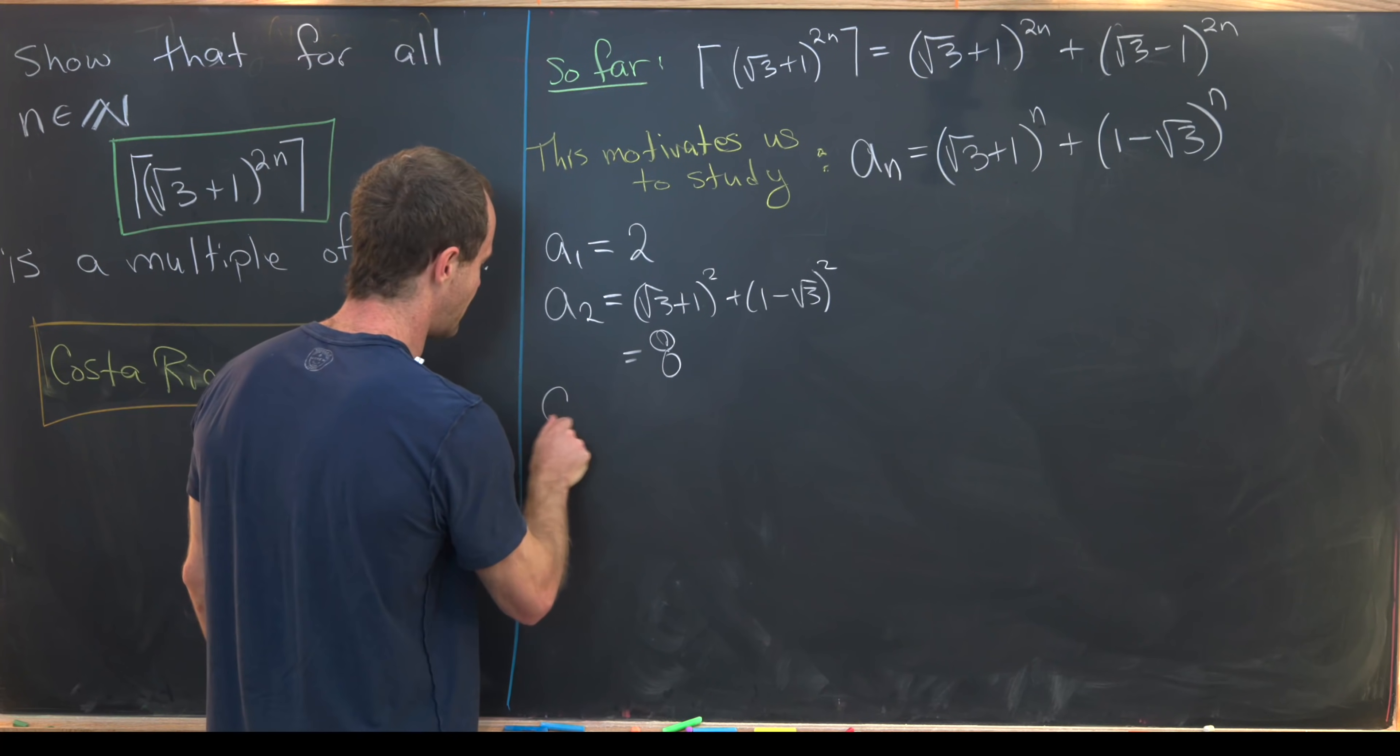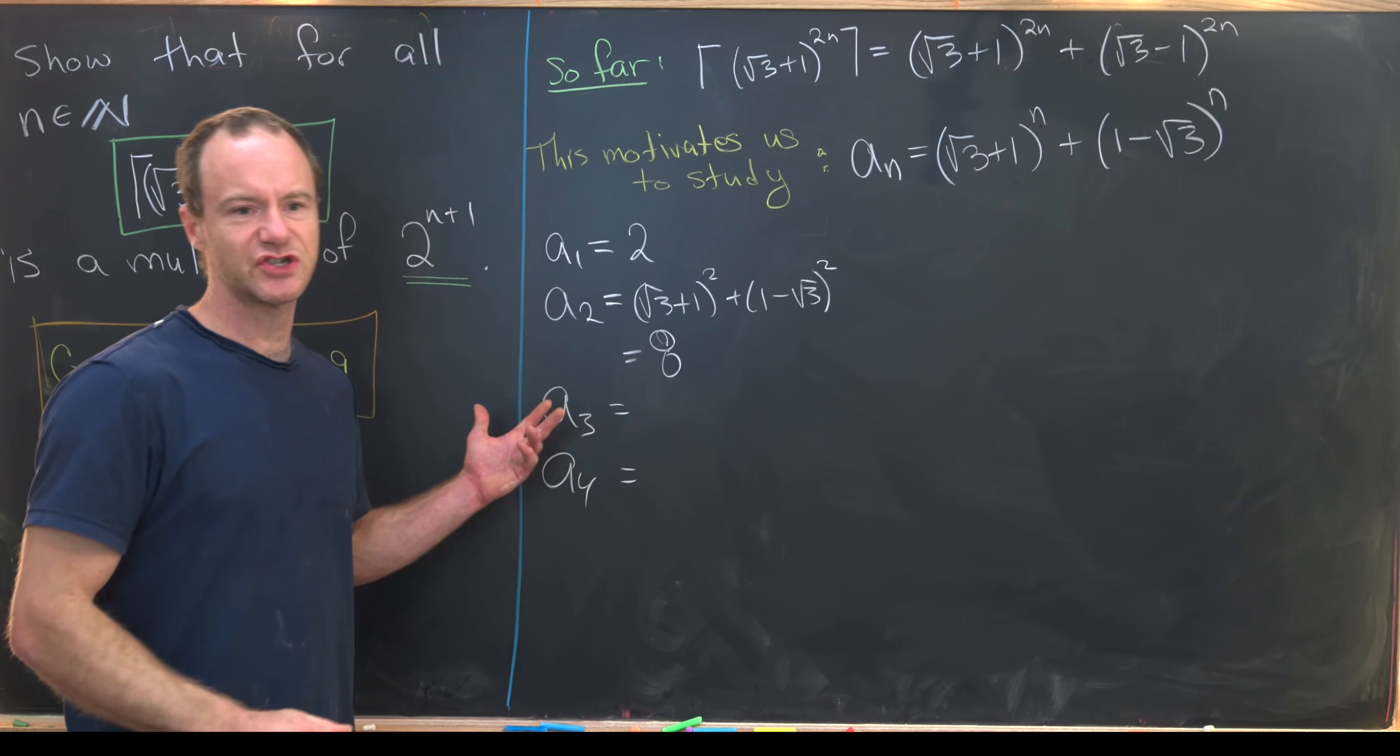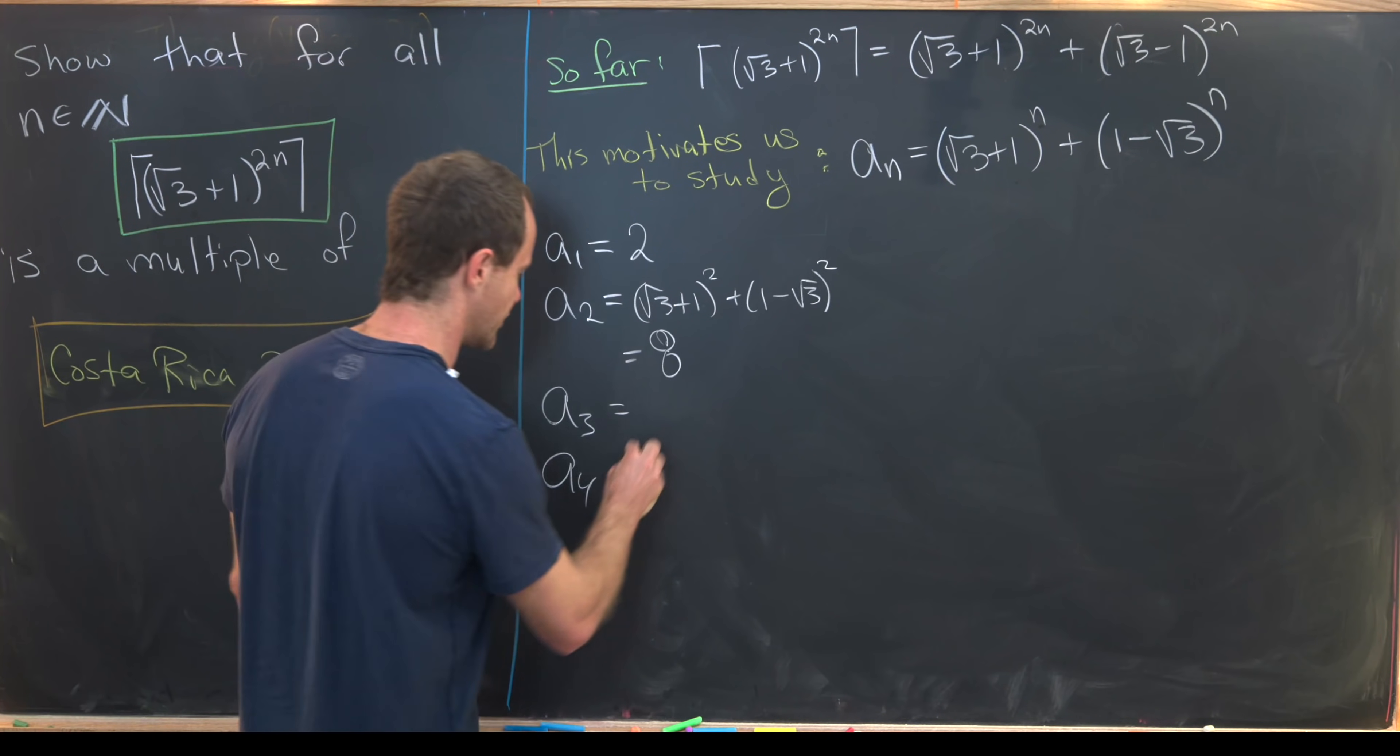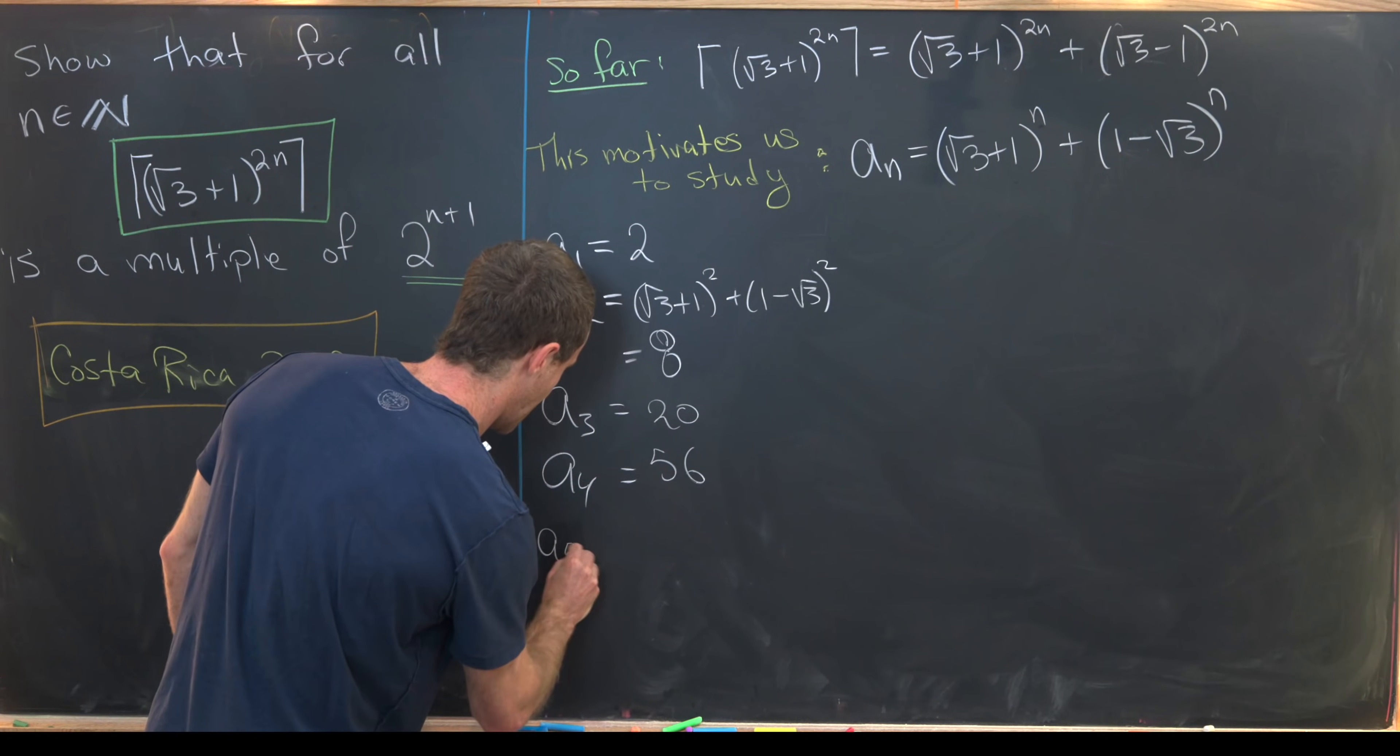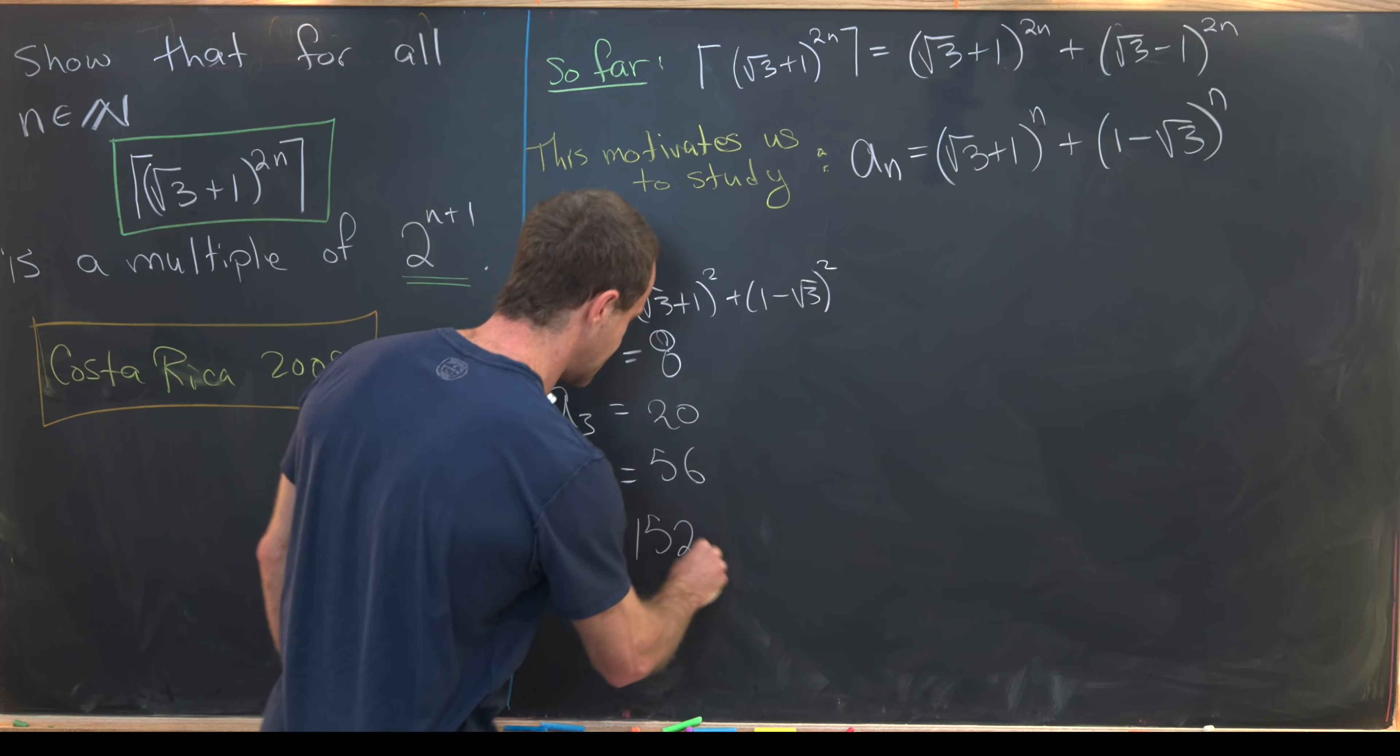Then let's calculate a couple more, a3, a4. So again, that's just like arithmetic, so I won't worry about doing it on screen. But here you get 20 and then you'll get 56. And then finally for a5, we'll get the number 152.